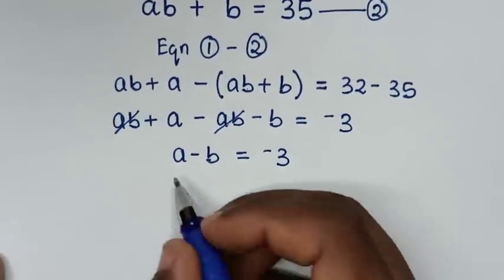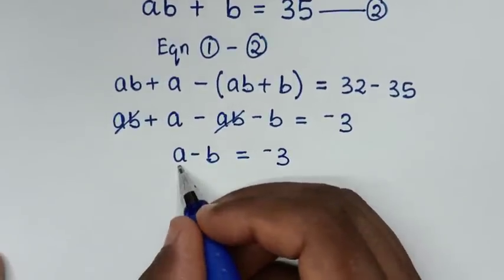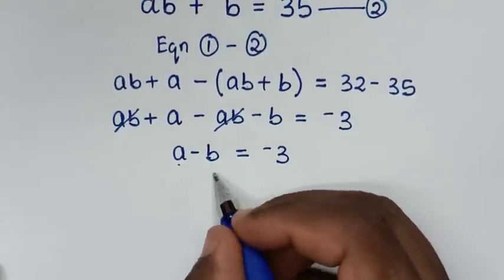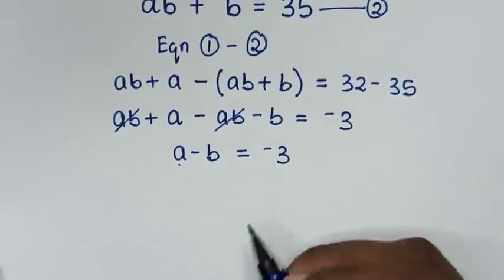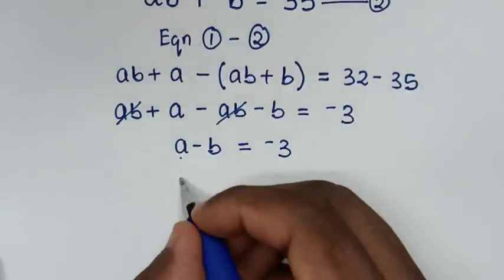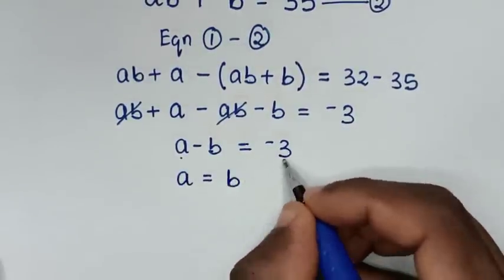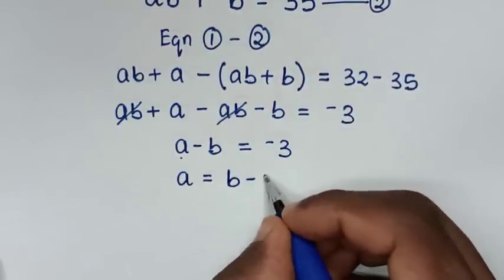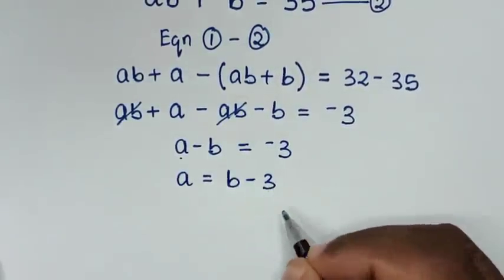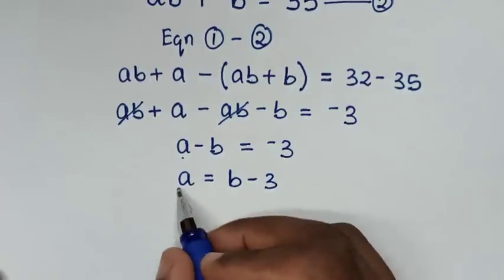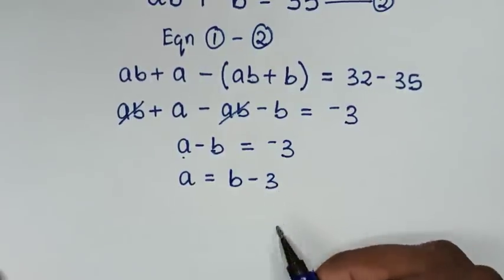From A minus B equals negative 3, we'll make A the subject. We'll take negative B to the other side, so A is equal to B minus 3.